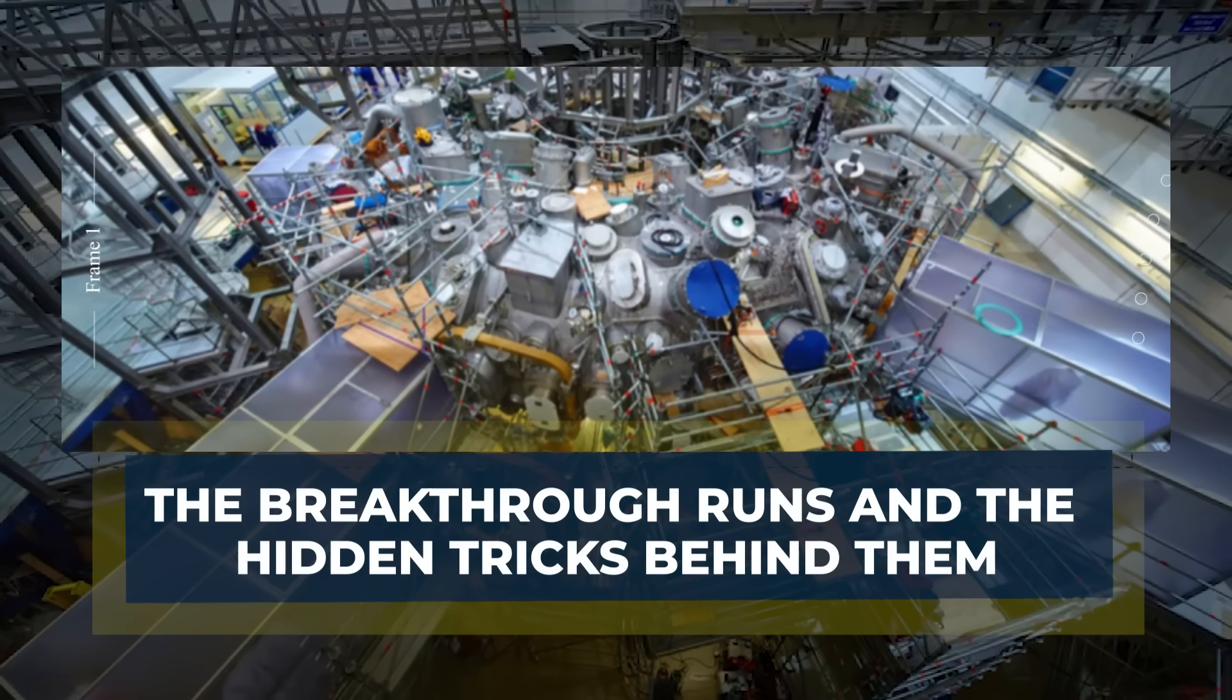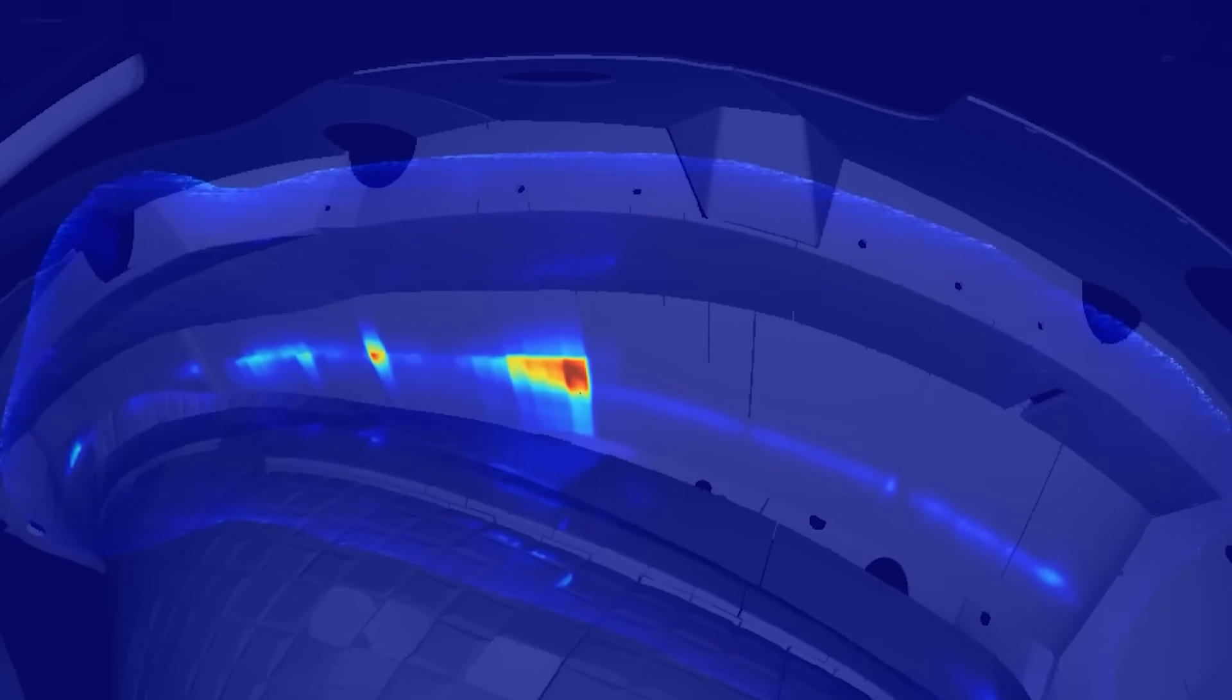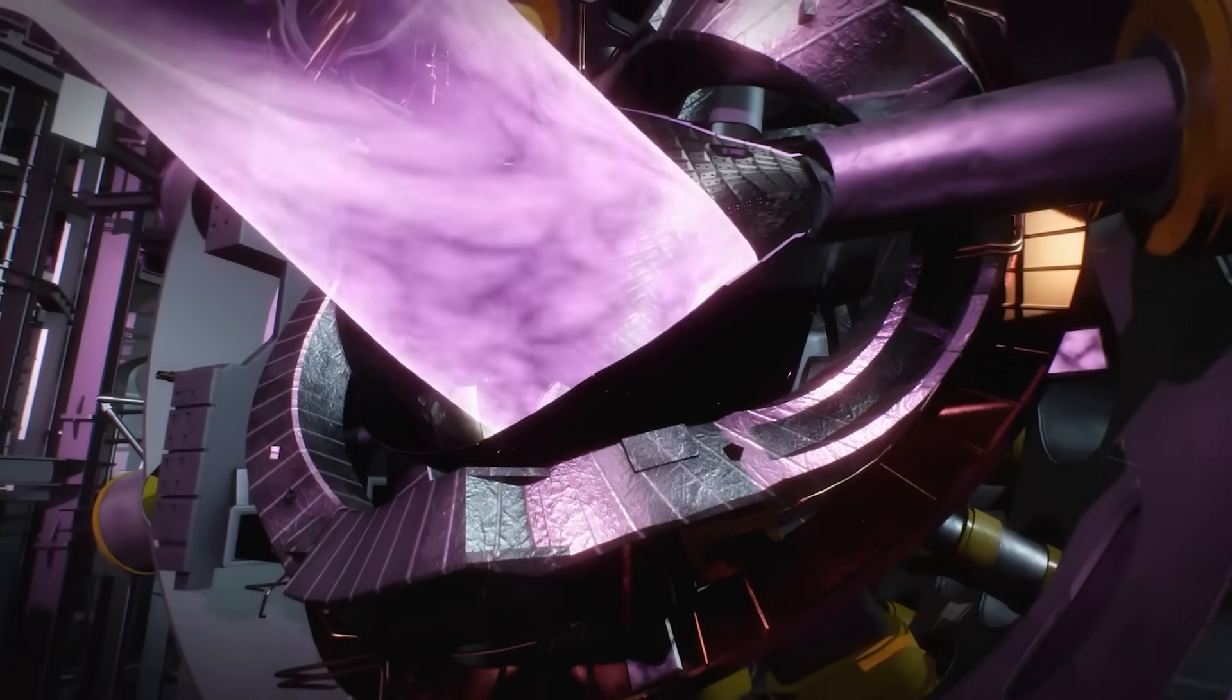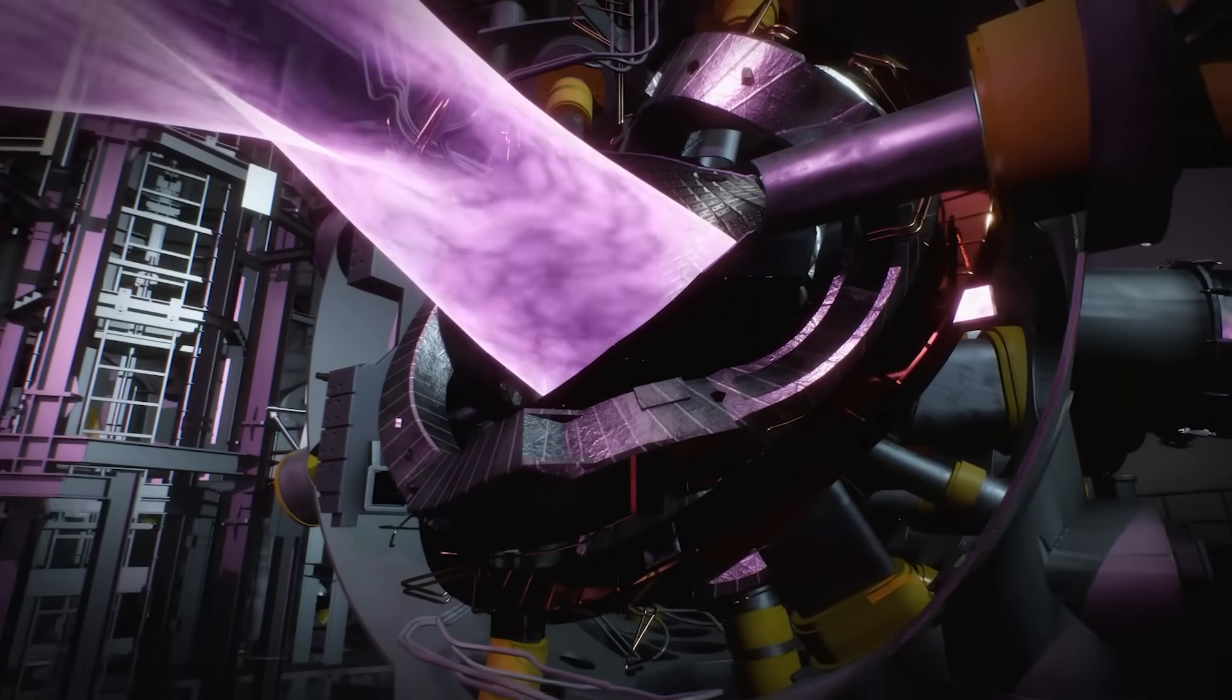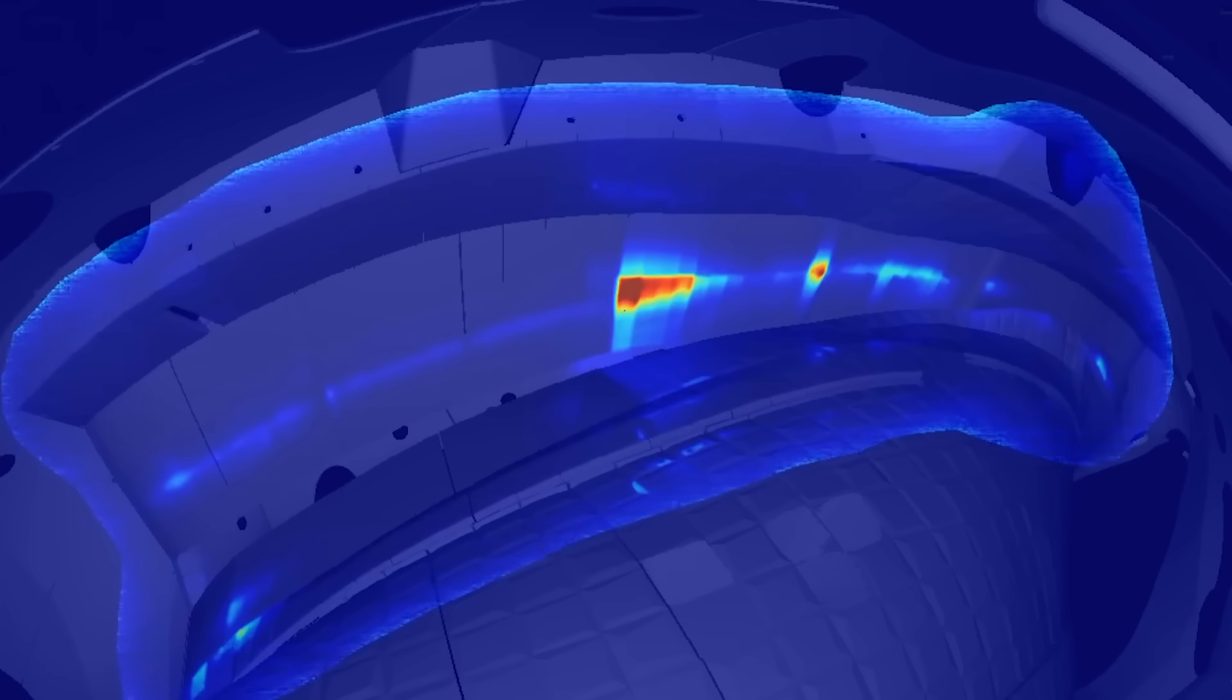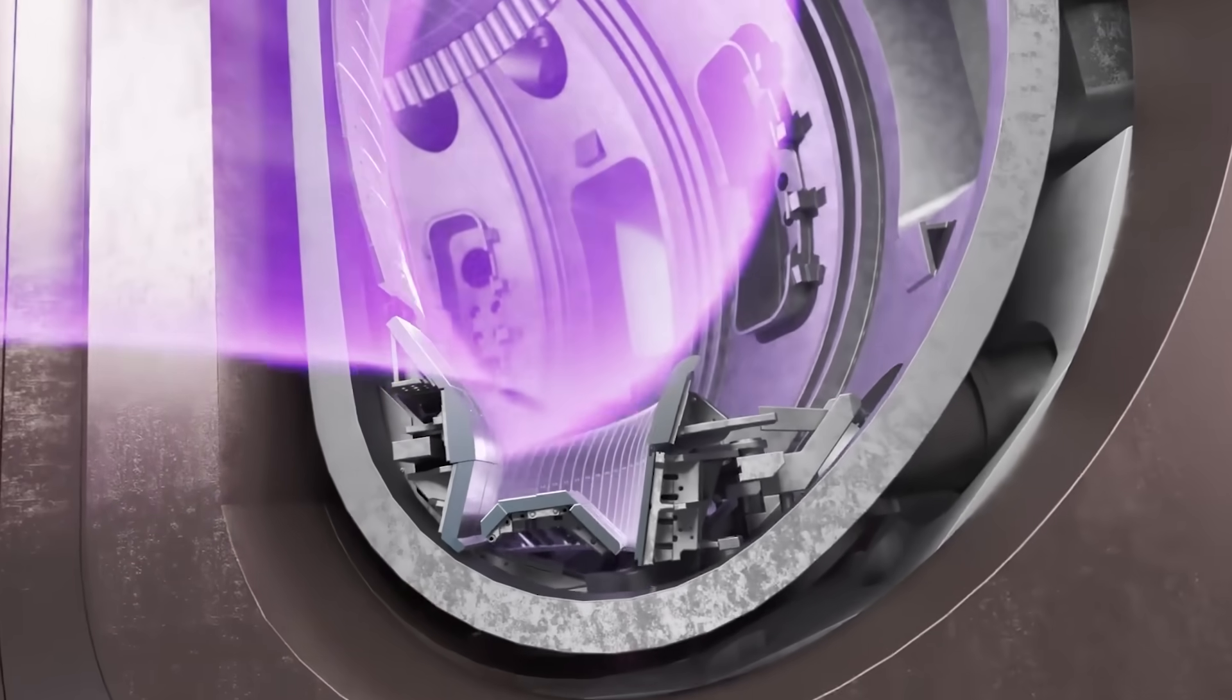The breakthrough runs and the hidden tricks behind them. The headline number that grabbed people was 8 minutes of stable plasma. That is not 8 minutes of chaos. It is 8 minutes where the plasma stayed controllable and predictable, long enough that scientists had to sit and watch it, not just capture a quick graph. Long shots like that are exactly what future plants need.